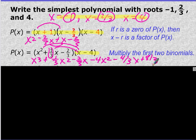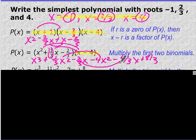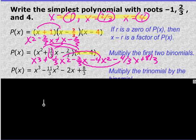And now we can combine our like terms. We have 2 x squared terms and 2 x terms, and that gets us to this final form of the polynomial, which is the simplest form, x cubed minus 11 thirds x squared minus 2x plus 8 thirds. And that's your final answer, so pretty simple.